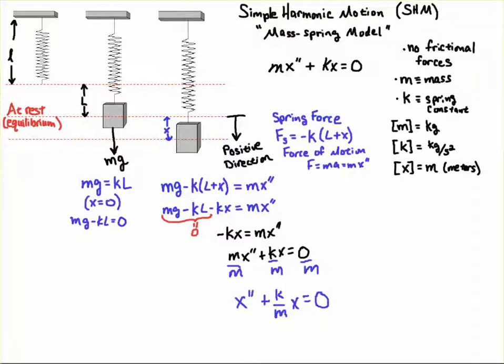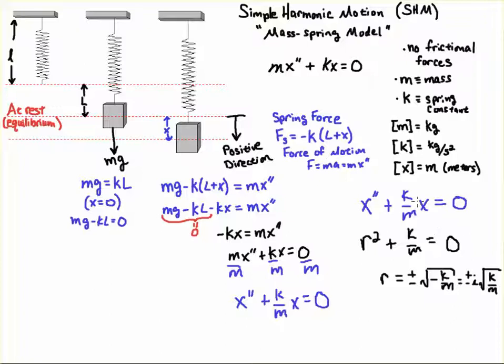And then once we have that ODE, I'm just going to write the characteristic equation. So remember that the exponent matches the derivative, so r squared, and then the exponent here is zero because this is the zeroth derivative—we're not taking a derivative—so we have r squared plus k over m.